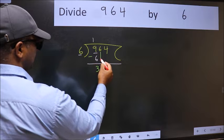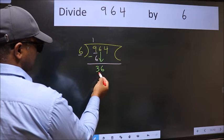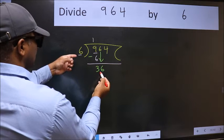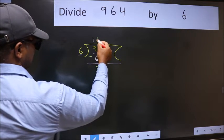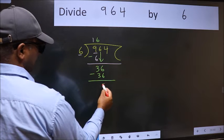After this, bring down the beside number. So, 6 down. 36. When do we get 36 in the 6 table? 6 times 6 is 36. Now we subtract. We get 0.